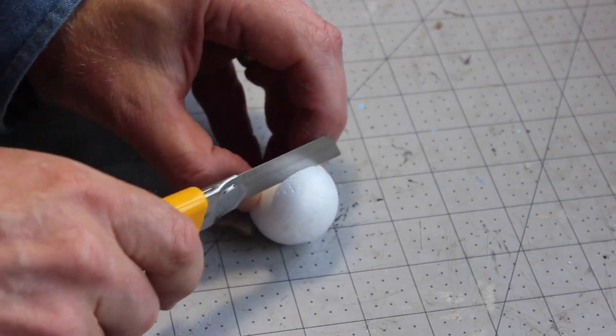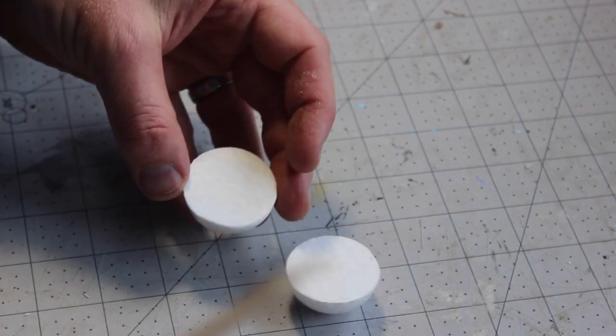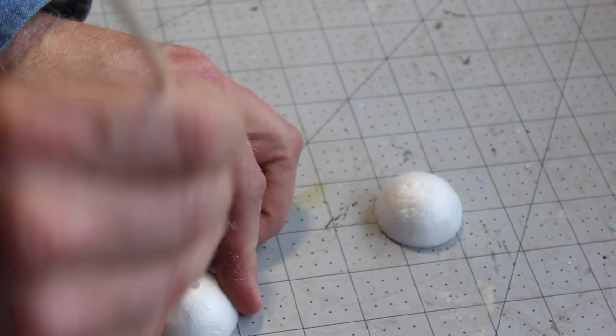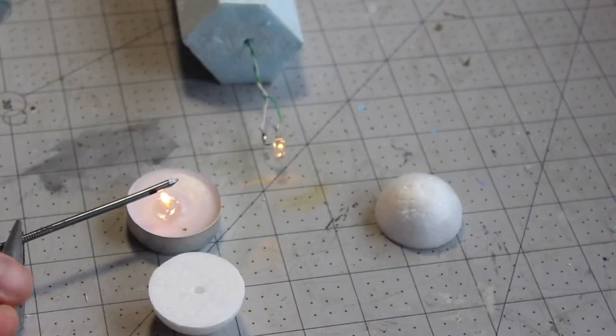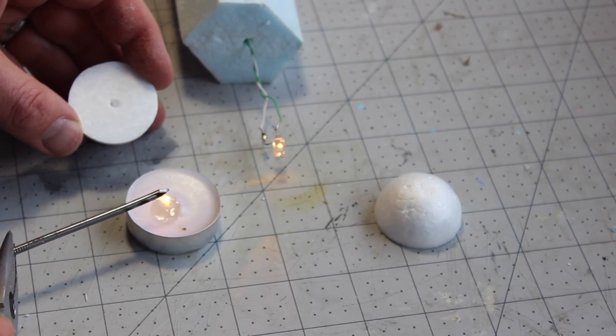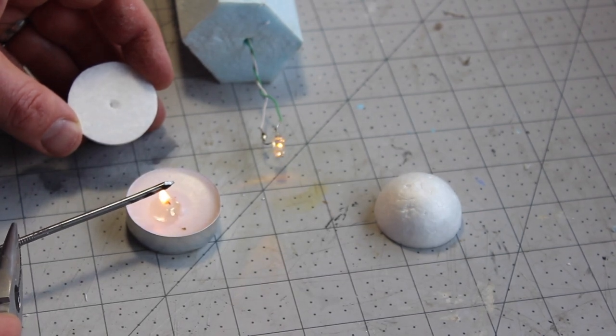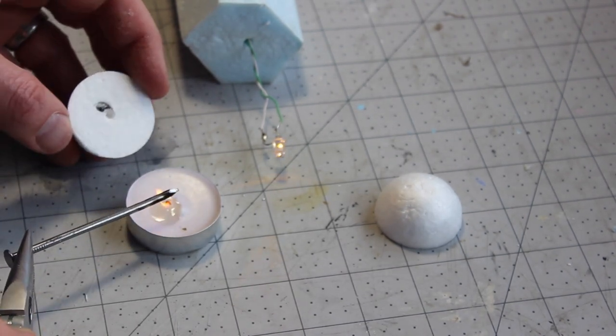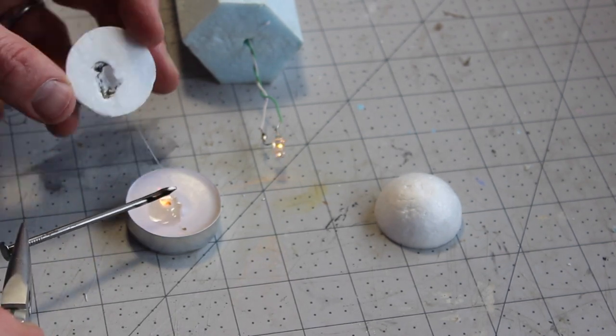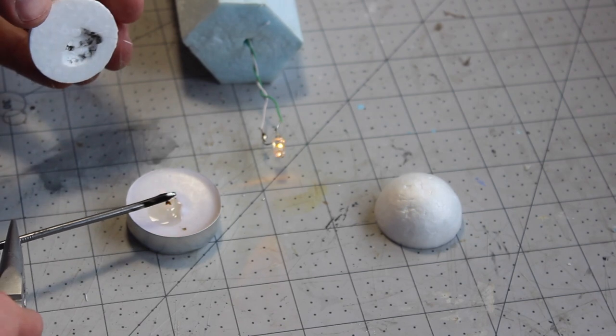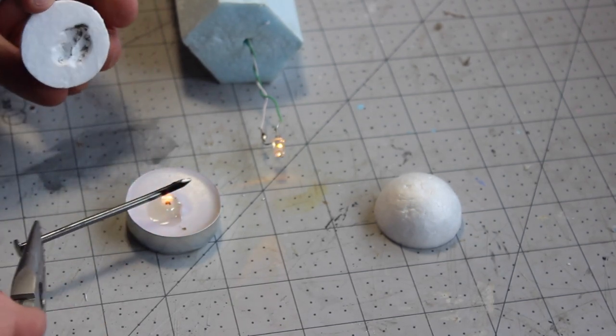I bisected a one and a half inch diameter styrofoam ball to make the bowl in which the flame will rest atop the torch. Using the same skewer I used to make the hole for the wire, I made a hole through the hemisphere of styrofoam so that the LED would fit, and then I gouged out a bowl in that hemisphere of styrofoam.